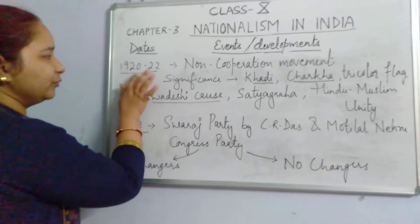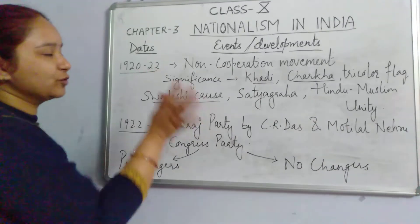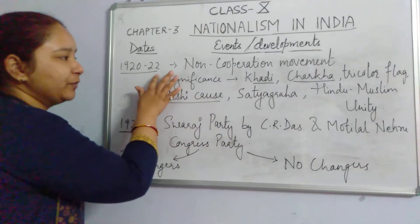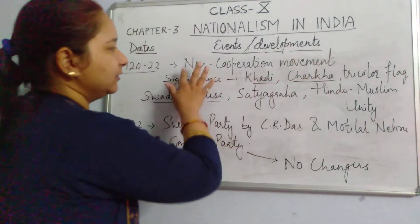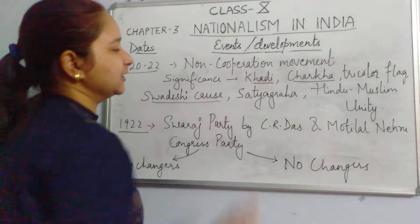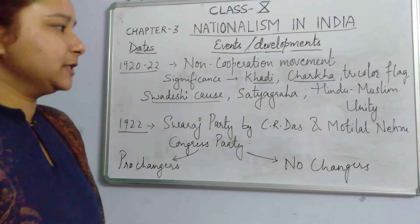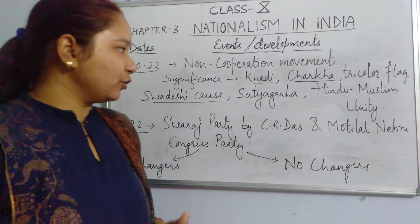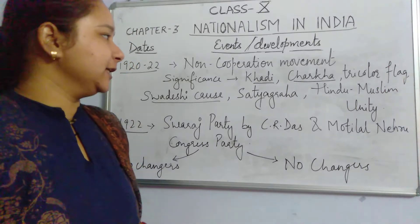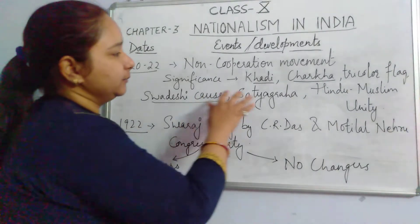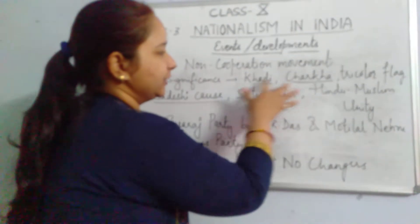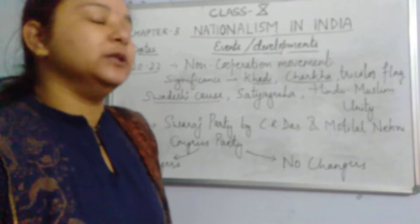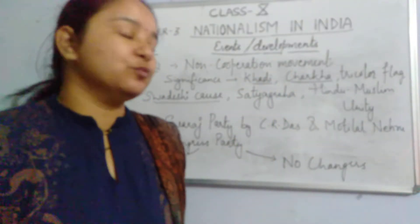The movement started in the year 1920 and it was called off by Gandhiji in the year 1922. This movement has great significance, reason being for the first time a mass movement was organized in India, and Khadi and Charkha were used as common symbols during this movement.